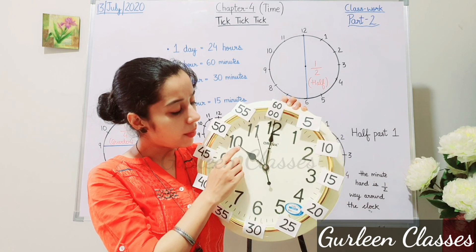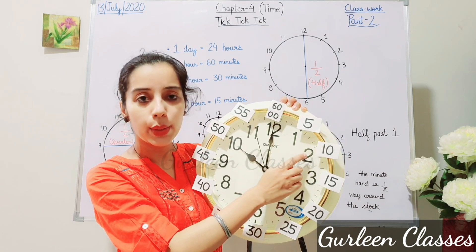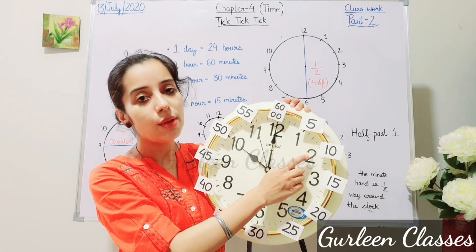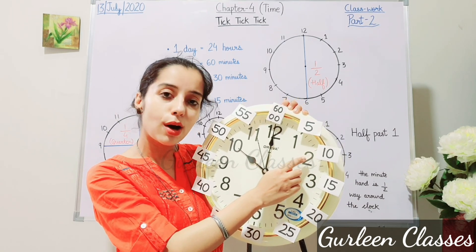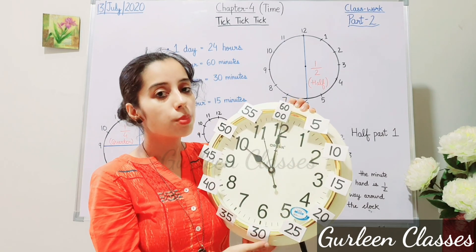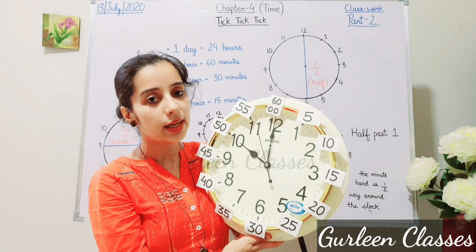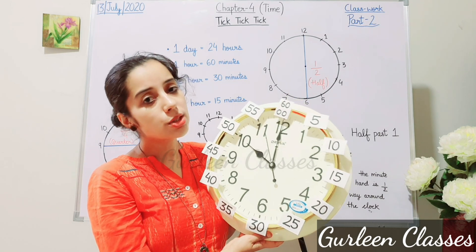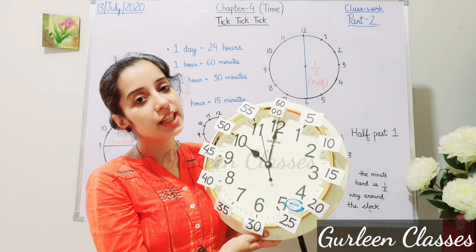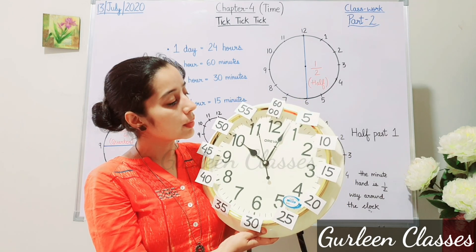If the hour hand is at 2, the time will be 2 o'clock. I hope students this is clear. Now, if I change the time, tell me what is the time.